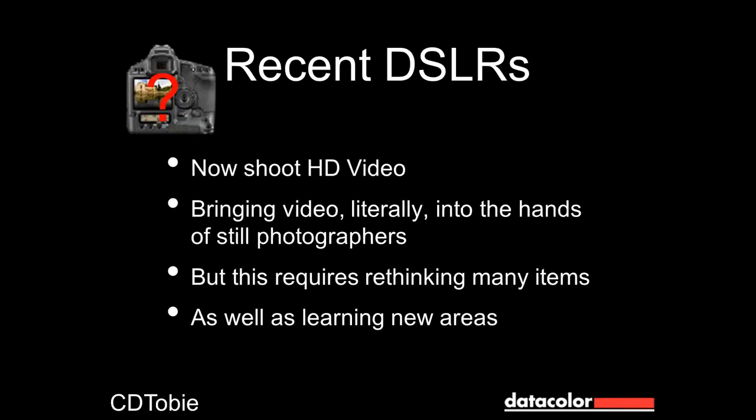Recent DSLR cameras — almost all high-end Nikon, Canon, Sony, and others — are shooting not just video but HD video. It's hard to distinguish from what TV and movies are made from. In fact, the final episode of the series House was shot entirely on Canon 5D Mark II cameras because they were a better choice for a location in a collapsed underground parking garage with very limited room and light.